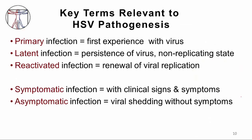There are some key terms that are important to understand as I discuss herpes pathogenesis. A primary infection is the first experience with that specific virus. A latent infection refers to the persistence of the virus in a non-replicating state — it's hibernating. A reactivated infection refers to the virus coming out of latency, renewing its replication, and then being able to spread from person to person. Symptomatic infections are associated with clinical signs and symptoms, while asymptomatic infections — which are very common with herpes virus — refer to viral shedding with no signs or symptoms.